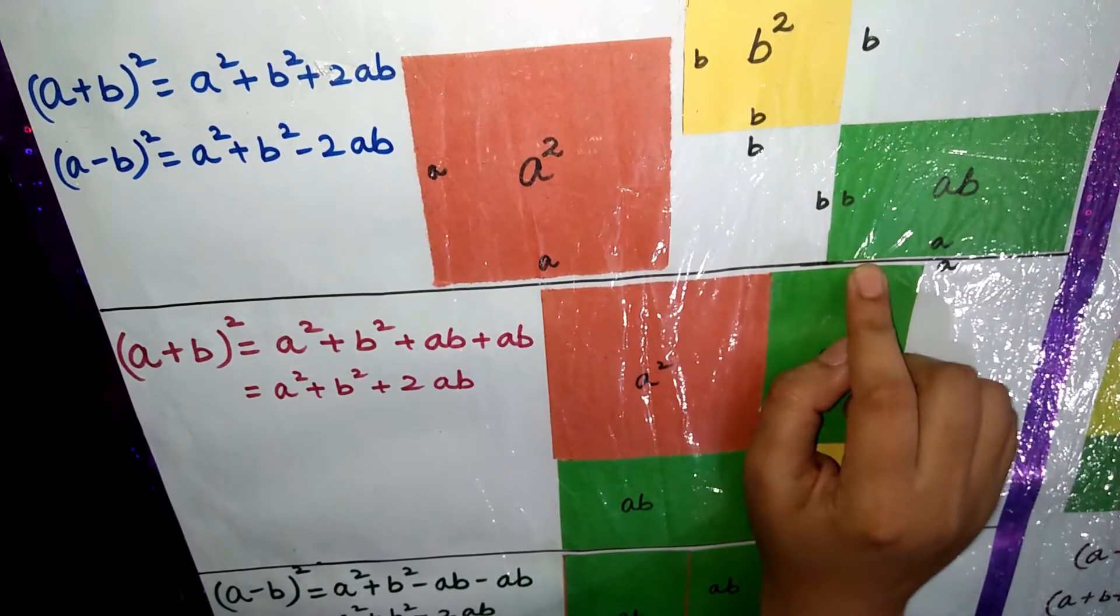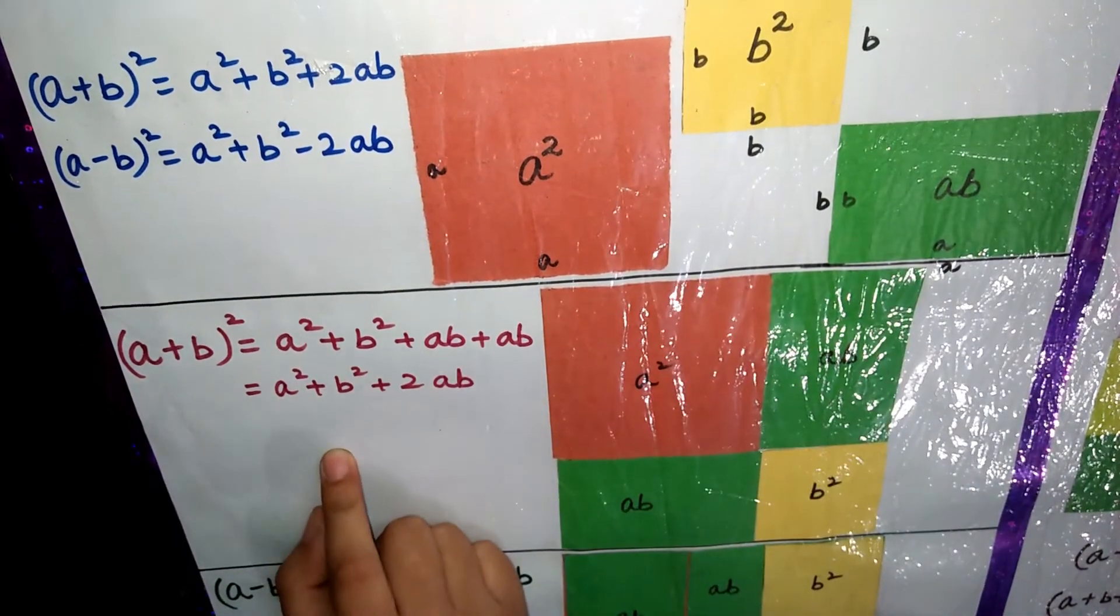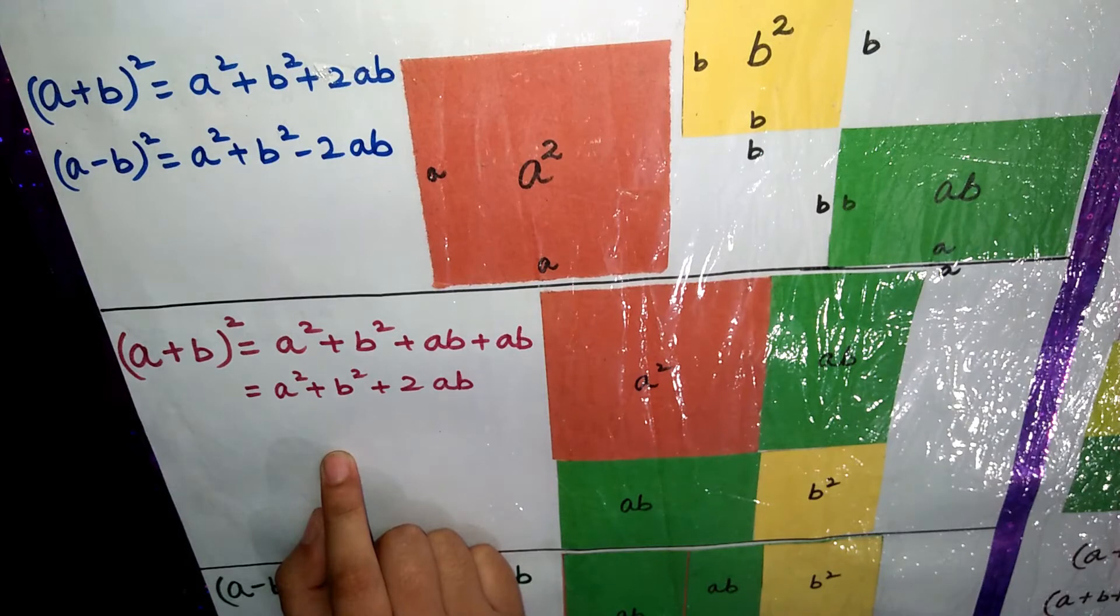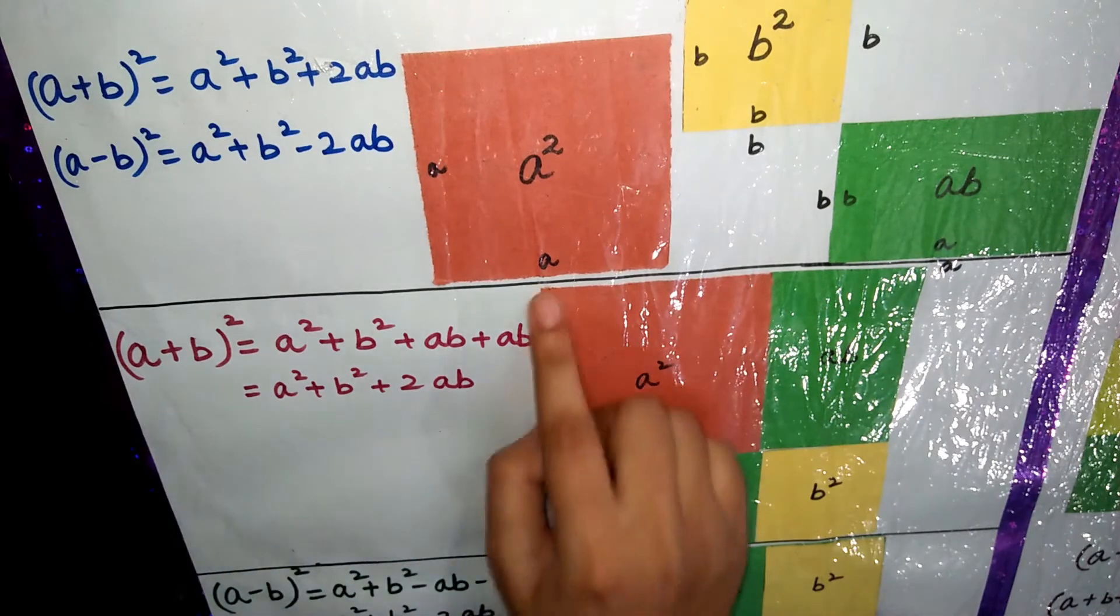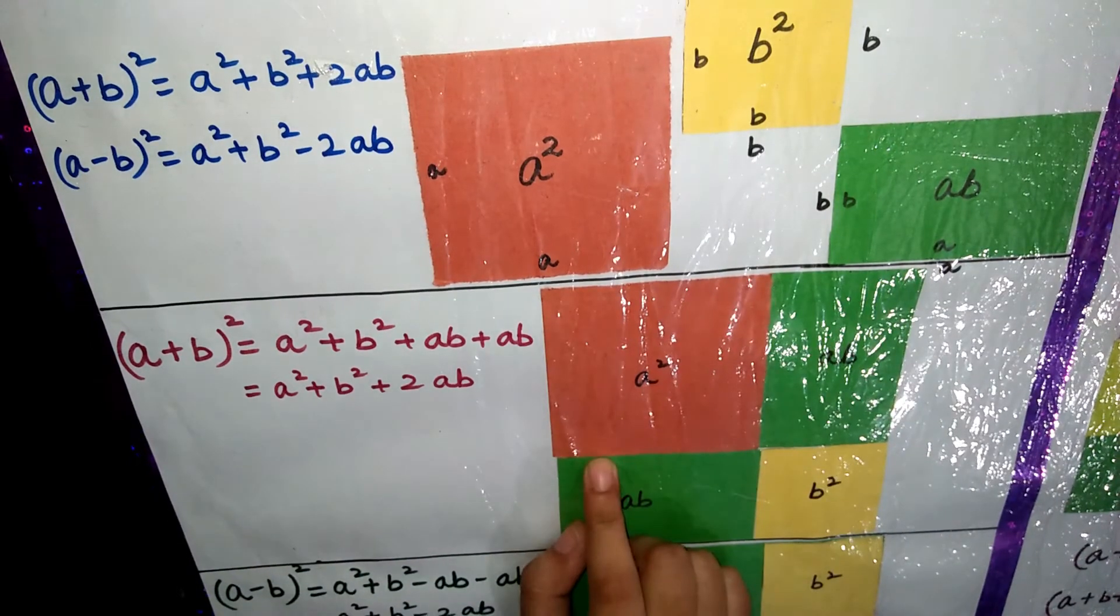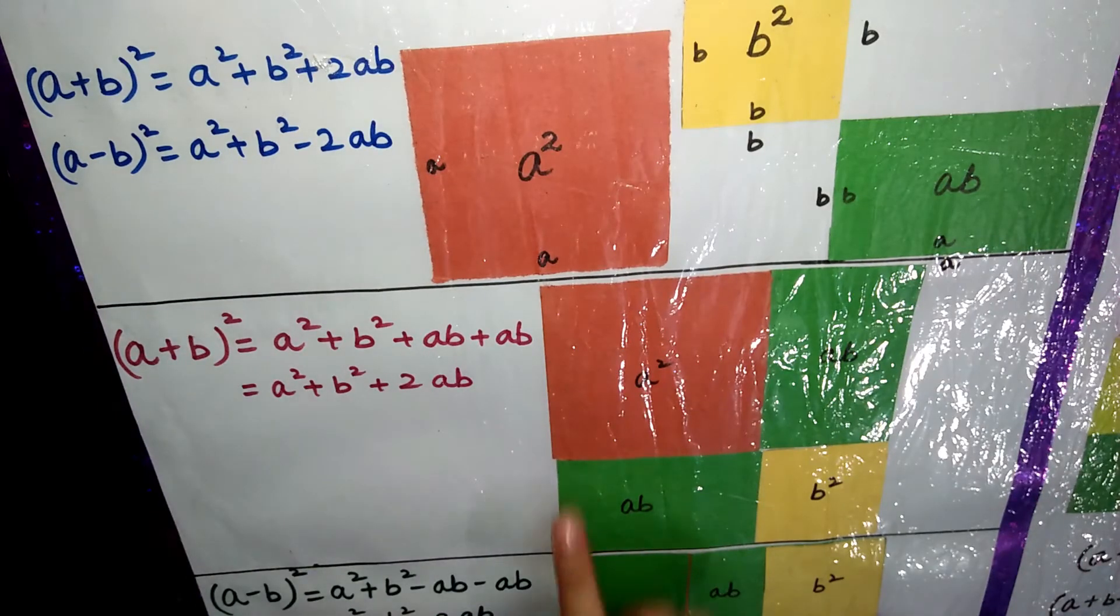Now this is a rectangle. In this, this is a and this is b, so this is ab. Now to prove first identity, a plus b whole square equals to a square plus b square plus ab plus ab. So take a big square and we will add a square, b square and two times ab so that this identity will be proved.